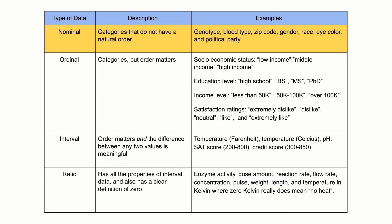First, nominal data, which has categories that do not have a natural order or ranking. Examples include genotype, blood type, zip code, gender, race, eye color, and political party. You can code nominal data with numbers if you want, but the order is arbitrary, and any calculations such as computing a mean, median, or standard deviation would be meaningless.